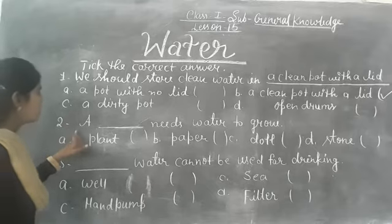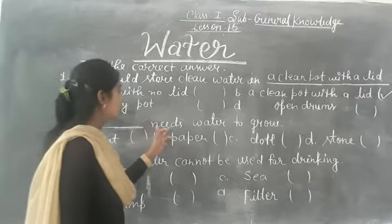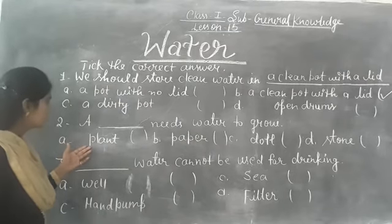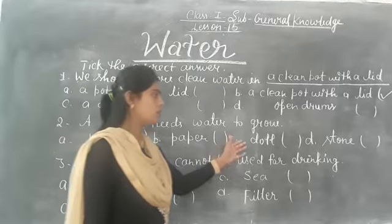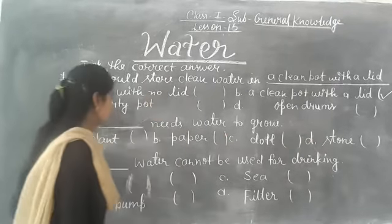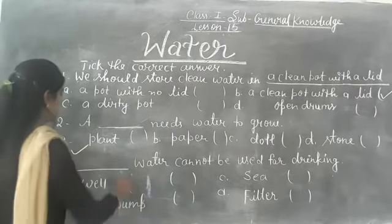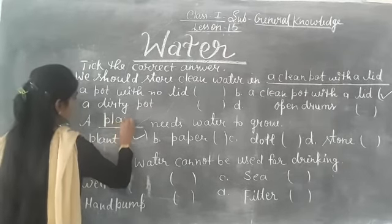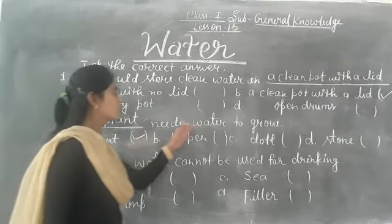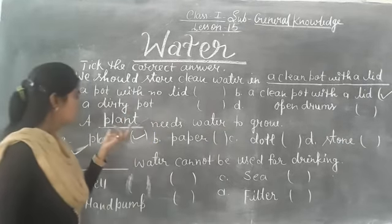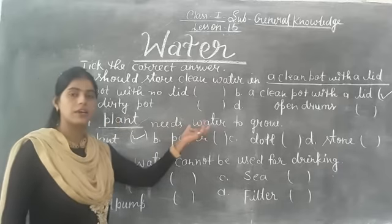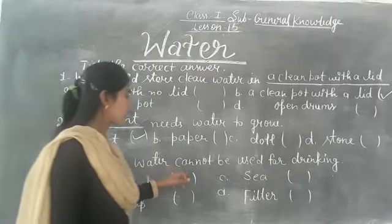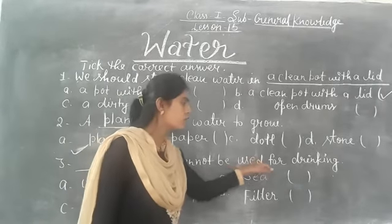Next question: A dash needs water to grow. Choose the correct option — plant, paper, doll, or stone? The answer is A — a plant. A plant needs water to grow.